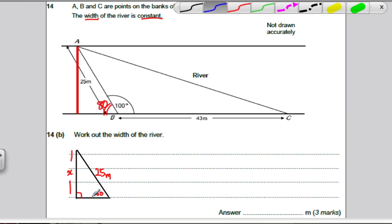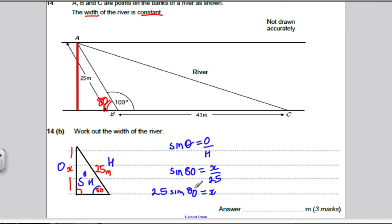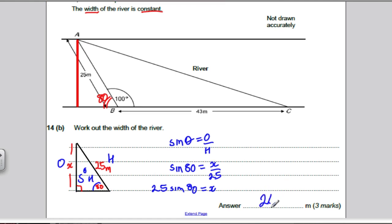So, step one. Label up your triangle. Here's the angle. This is opposite. This is hypotenuse. What of SOH, CAH, TOA, has O and H? Well, SOH. What does SOH mean? Sine of the angle is opposite over hypotenuse. Well, in this case, sine of 80 is opposite, which is x divided by 25. And then rearranging, x is therefore, times in both sides by 25, 25 sine 80. And you work that out on your calculator. And you would get 24.6 meters.